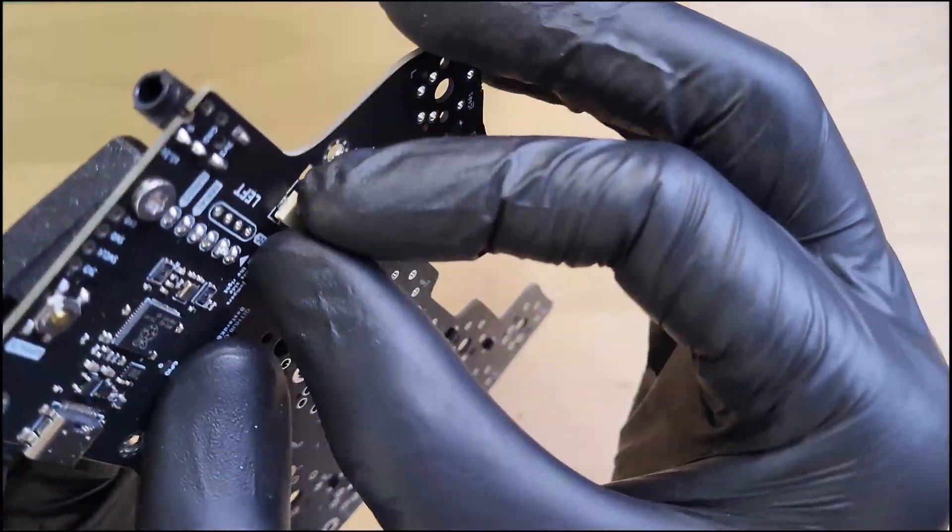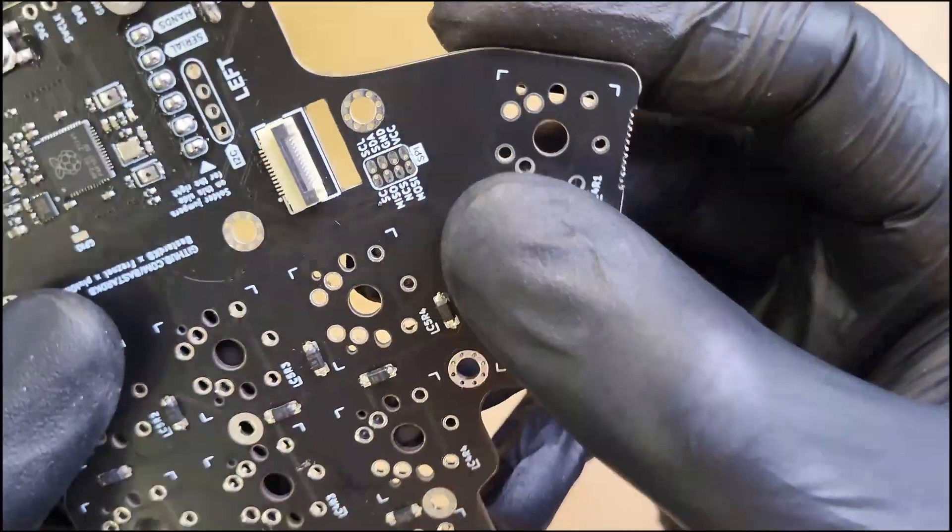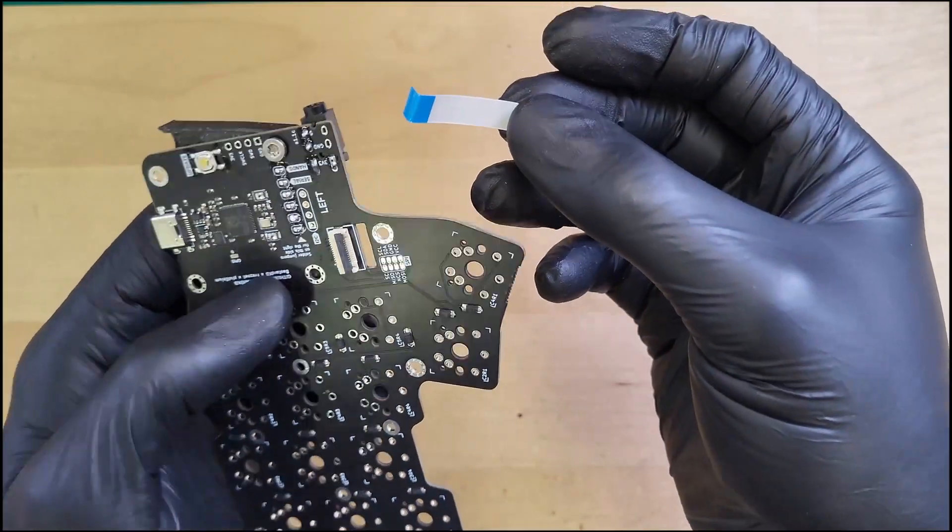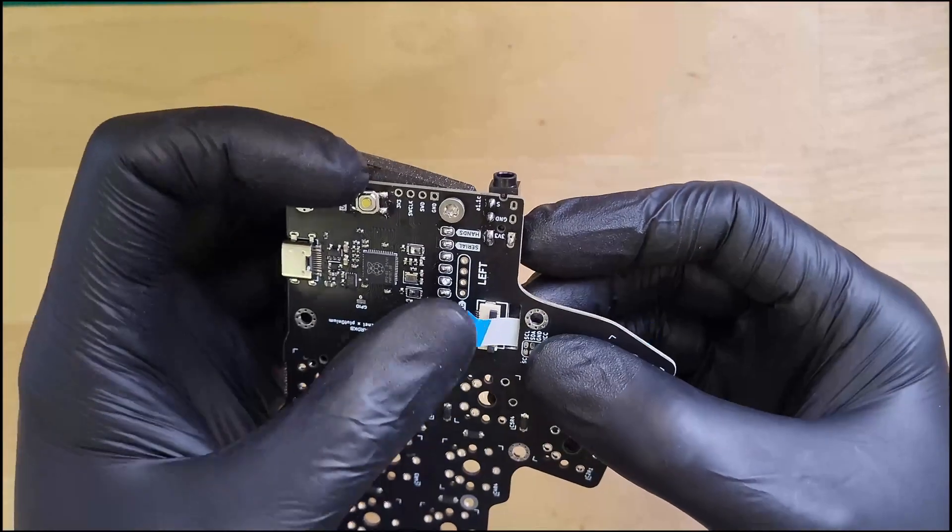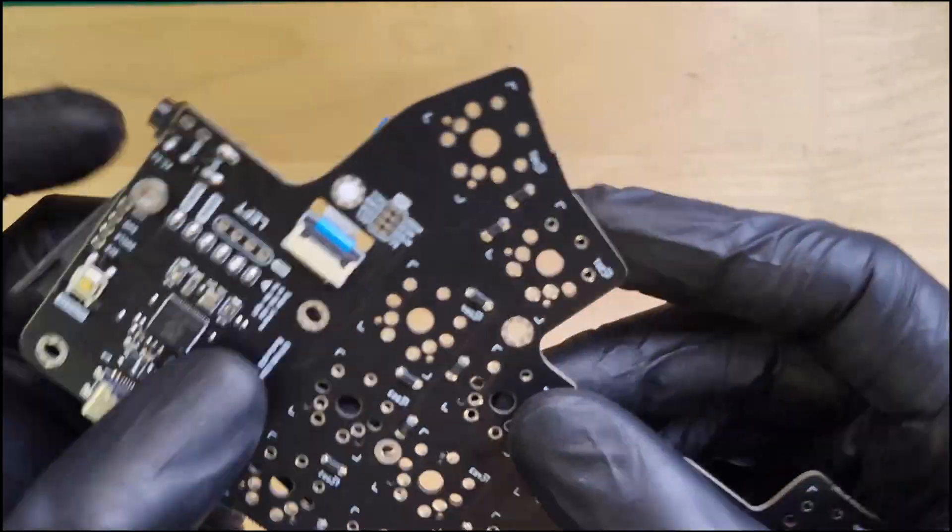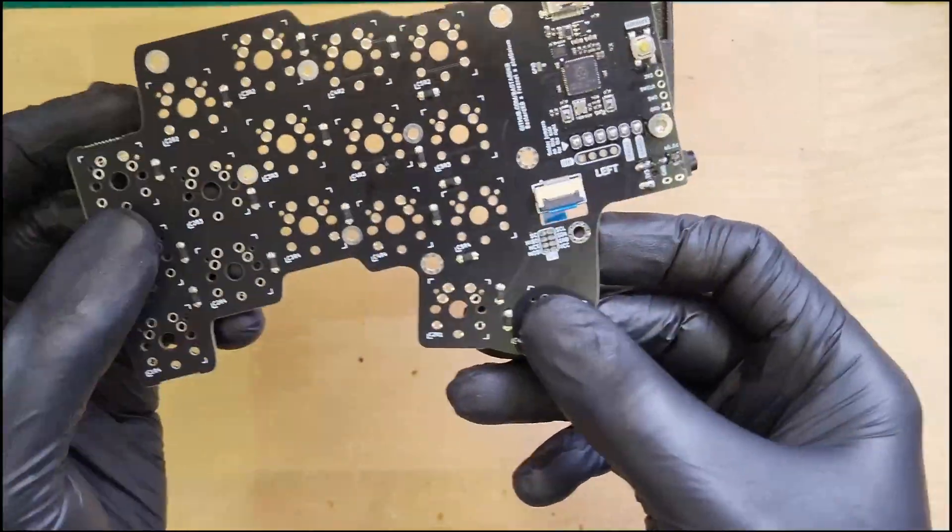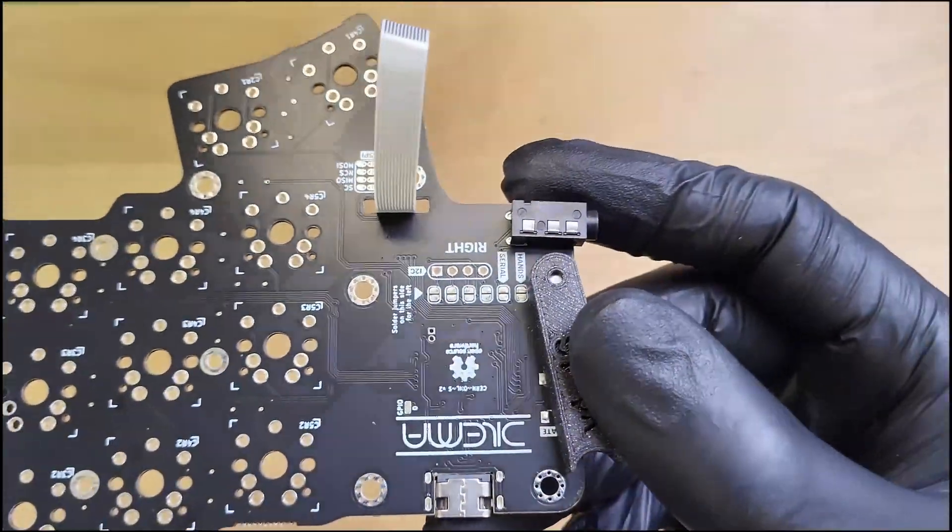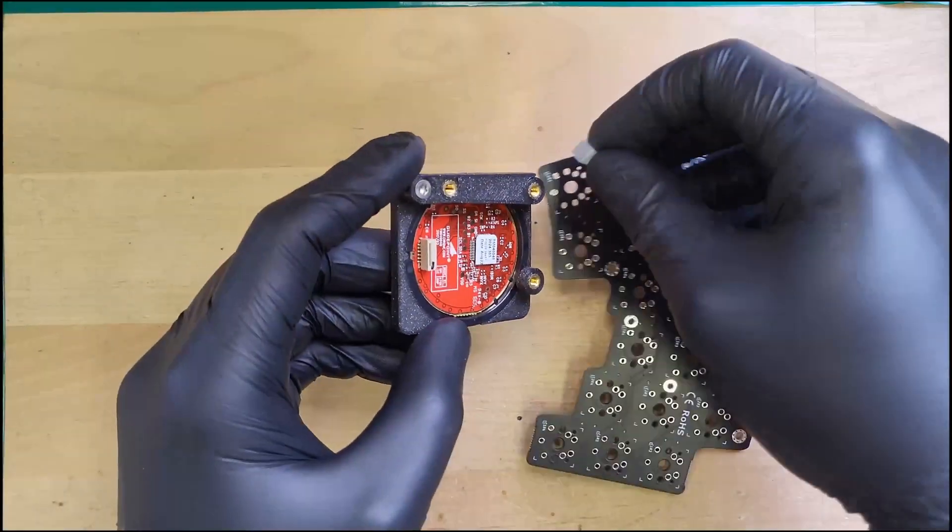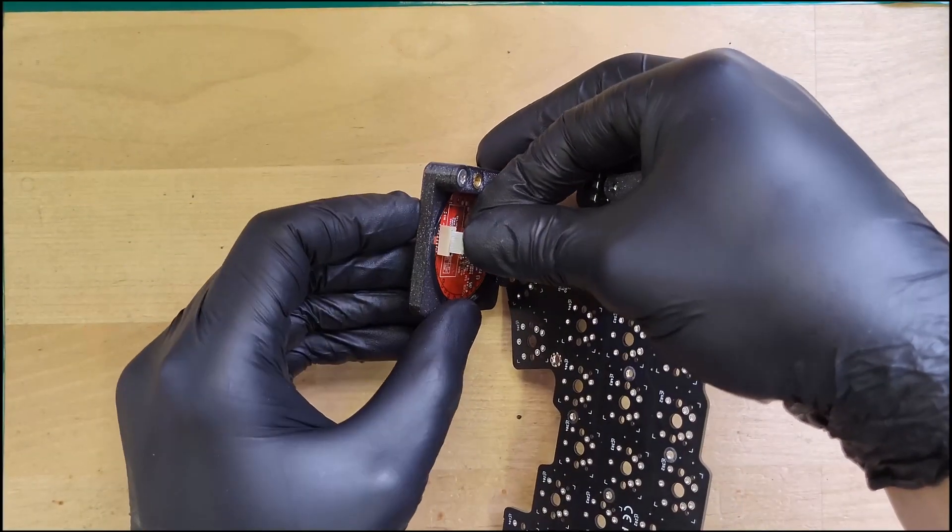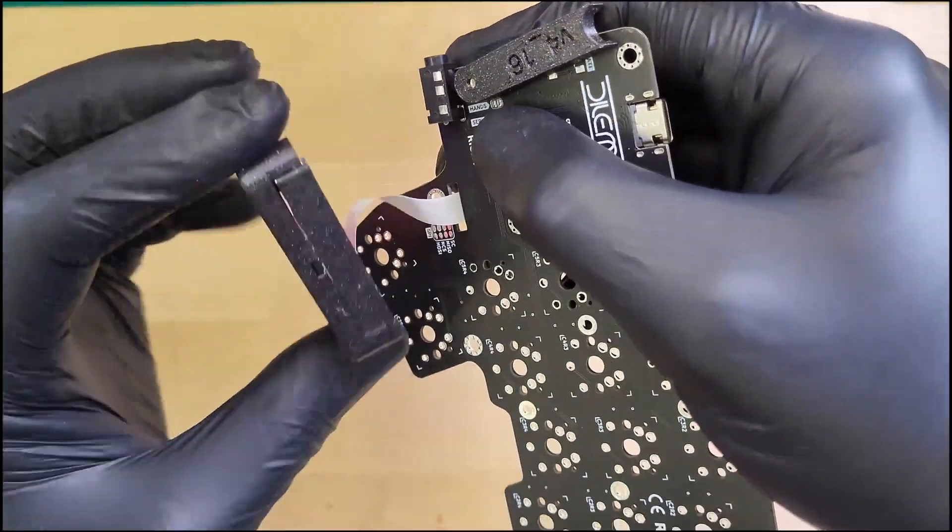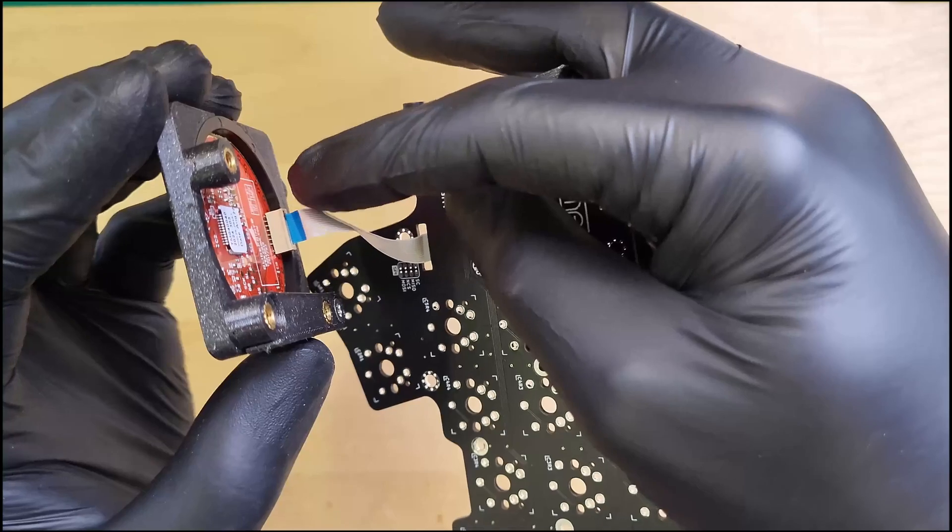Grab the right plate and open the FPC connector on it. Slide the ribbon cable inside the hole and then in the FPC connector. Then close the connector. Make sure that the blue part of the ribbon cable is visible. Slide the other end of the cable into the trackpad PCB. Double check the orientation, the blue side should be pointing towards the middle of the trackpad PCB.